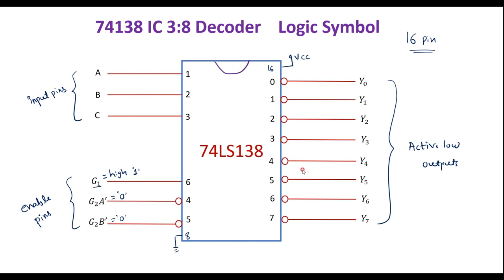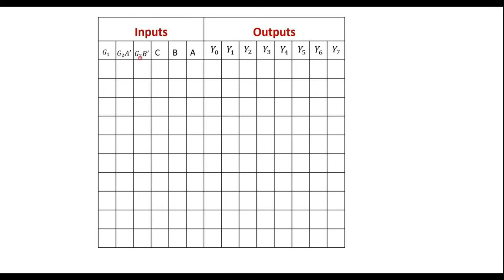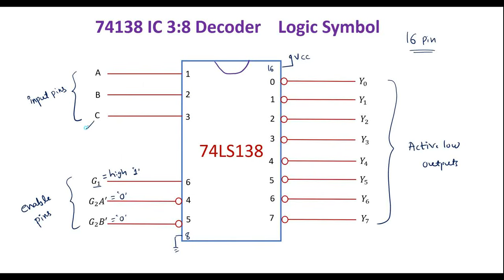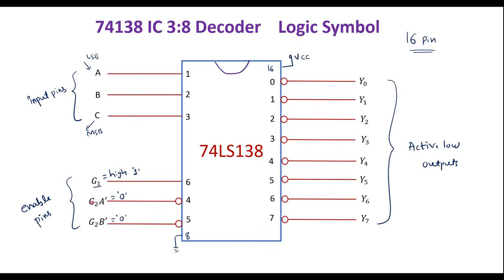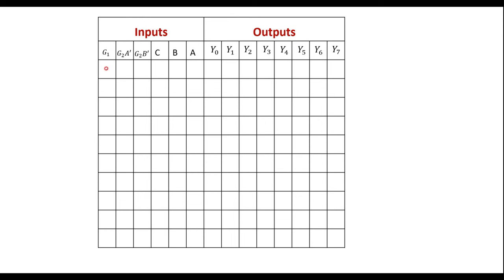Now let me explain the function table of the 74138 IC. It has enable pins G1, G2A-bar, G2B-bar, and input pins C, B, A, where C is the MSB and A is the LSB. When the G1 line is 0 — it should always be high — irrespective of the G2 lines and the inputs, all outputs are always high. So if enable pin G1 is 0, all outputs are high regardless of remaining inputs.